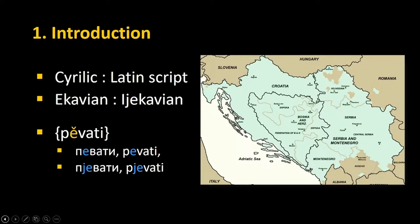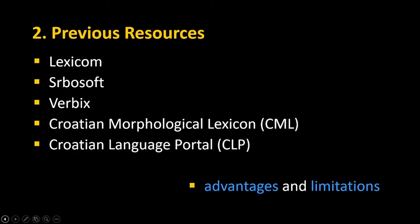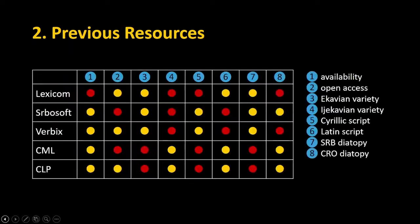There are some electronic conjugators already on the market — I can name five of them. The first three represent the Serbian language and the last two the Croatian language. They have many advantages but also some limitations. I will try to assess them qualitatively using a traffic light system: a yellow dot means the feature is okay, and a red dot means there is a problem or something is missing.